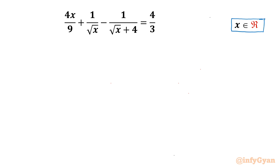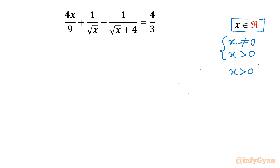The denominator cannot be 0, so x cannot be 0. Also, x should be greater than 0 since a square root is involved. Taking the intersection of both conditions, x must be strictly positive.